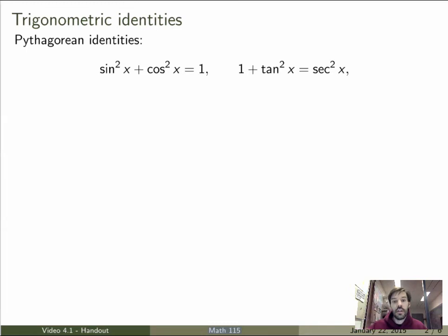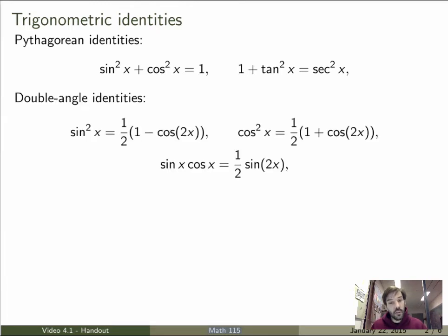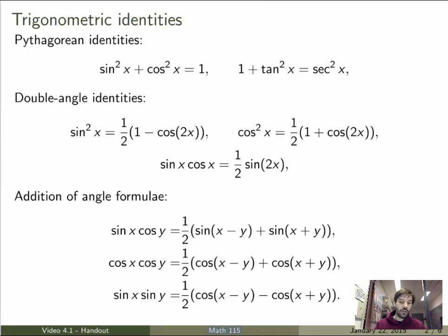So we'll first use standard trig identities, Pythagorean identities: sin²x + cos²x = 1, and similarly for tan and secant. We're also going to use a double angle formula, so these are relating sine of x and cos of x to sine of 2x and cos of 2x, and addition of angle formulas which relate sin x cos y, cos x cos y and sin x sin y. Now you don't have to know all of them by heart, but you can just look them up and use them to evaluate the integrals.